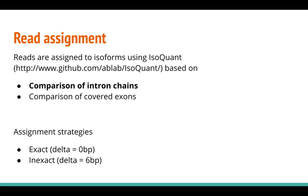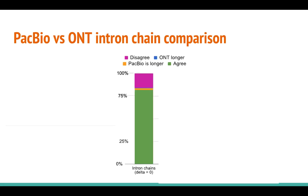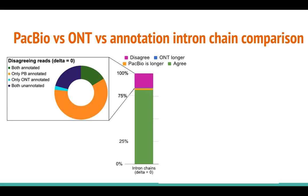We considered the internal chain of every read and performed a three-way comparison of internal chains between read pairs and the annotation using an alignment tool. In most read pairs, the PacBio and the ONT read had identical internal chains. In 16% of cases, internal chains between reads in a pair disagreed. For most of these disagreeing pairs, the PacBio read often precisely agrees with the annotation, while the ONT read does not.